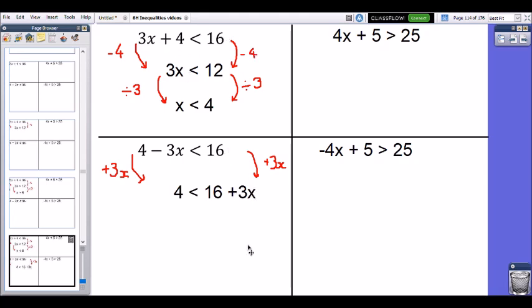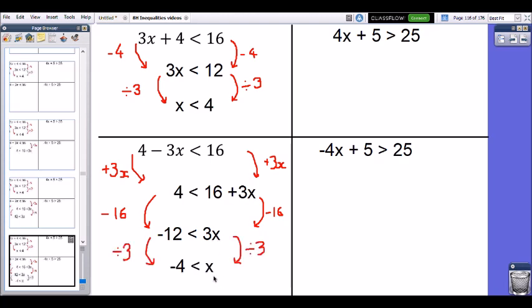Right, so I just want x on its own, so that 16 has no reason to be there. Let's subtract 16 from both sides. Okay, so 4 take away 16 gives me negative 12. So I'm very close to my solution now, but I don't want 3x, I just want x on its own. To get from 3x to x on its own, I'm going to divide by 3. Negative 12 divided by 3 gives me negative 4. So that means that as long as x is greater than negative 4, this inequality will always be true.